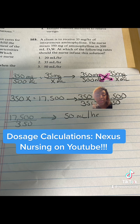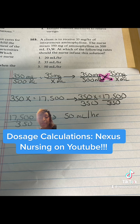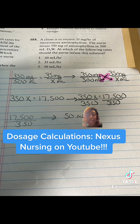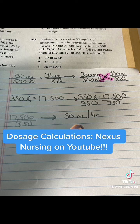Now I cross multiply. So 350X is equal to 500 times 35, which gives us 350X equals 17,500. To get X by itself, I divide both sides by 350. 17,500 divided by 350 — how many times does 350 go into that? And your answer is 50.